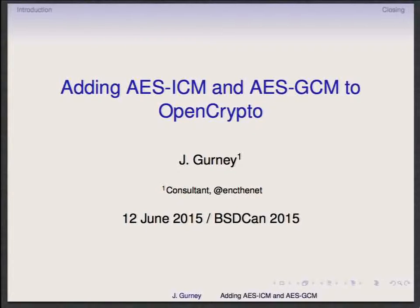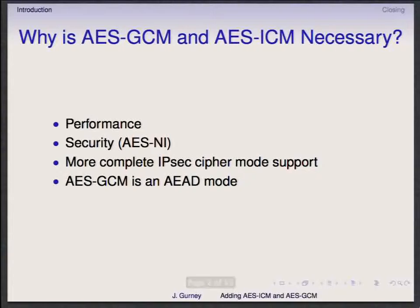Originally, if you were here last year, you may have attended my talk on adding AES-XTS to the FreeBSD kernel. That was purely in order to make my encrypted hard drives perform faster — encrypted hard drives makes RMA much easier and quicker. After doing that, Jim Thompson from NetGate approached me and said they would like to add additional modes to FreeBSD IPsec, so he contacted me and I decided to do some work.